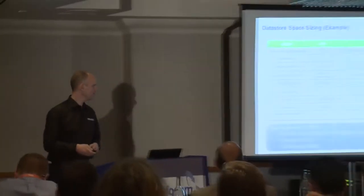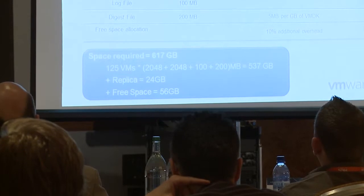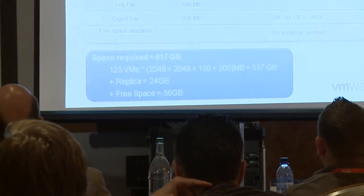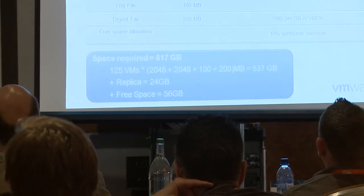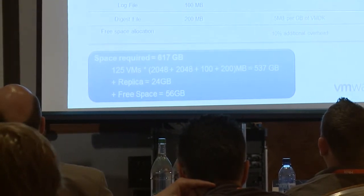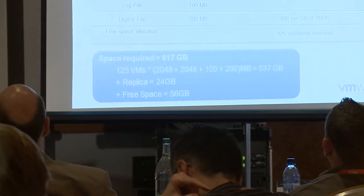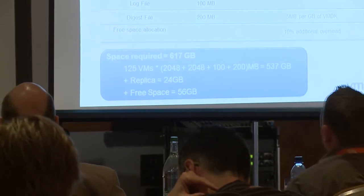For sizing: the replica is as big as the actual data in your master — so if you created a 40GB C drive but only have 24GB of data, that's the replica size. Estimate link clone growth — how big the C drive grows before a refresh or delete on log off. The OS page file is the bigger consumer, equal to the memory allocated. Allowing 10% overhead as best practice, for 125 desktops it works out to approximately 617GB of SSD storage needed.